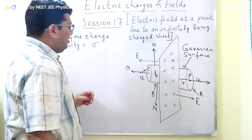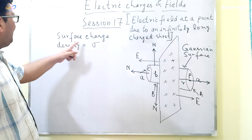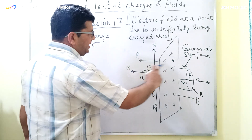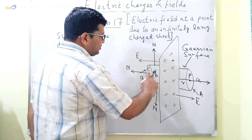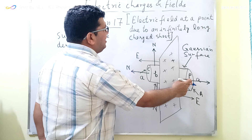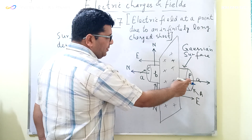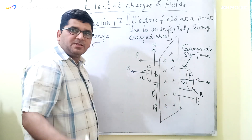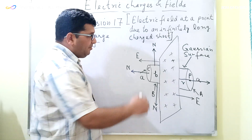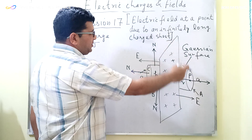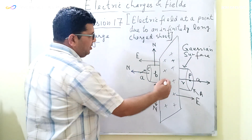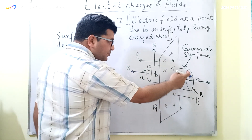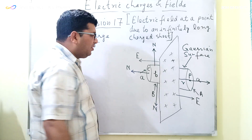The surface charge density has been taken as Sigma, and we have to find the electric field. I have already drawn one figure to save time. We need to find the electric field at this randomly chosen point P. As per Gauss's Law, we will use Gauss's Law to find the intensity of the electric field at point P. The first step is to make a Gaussian surface enclosing that point.